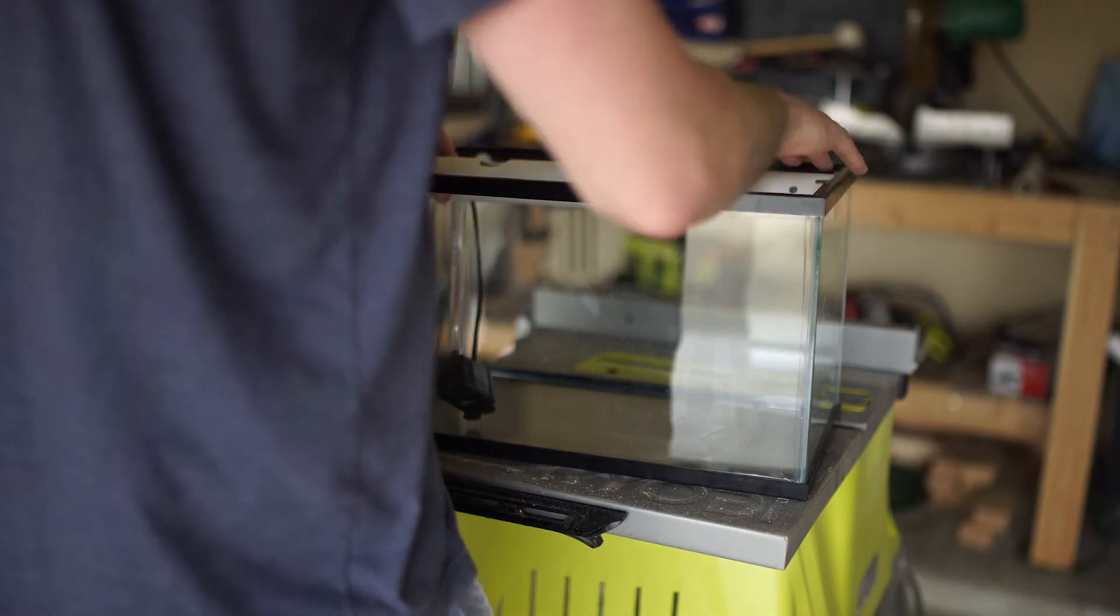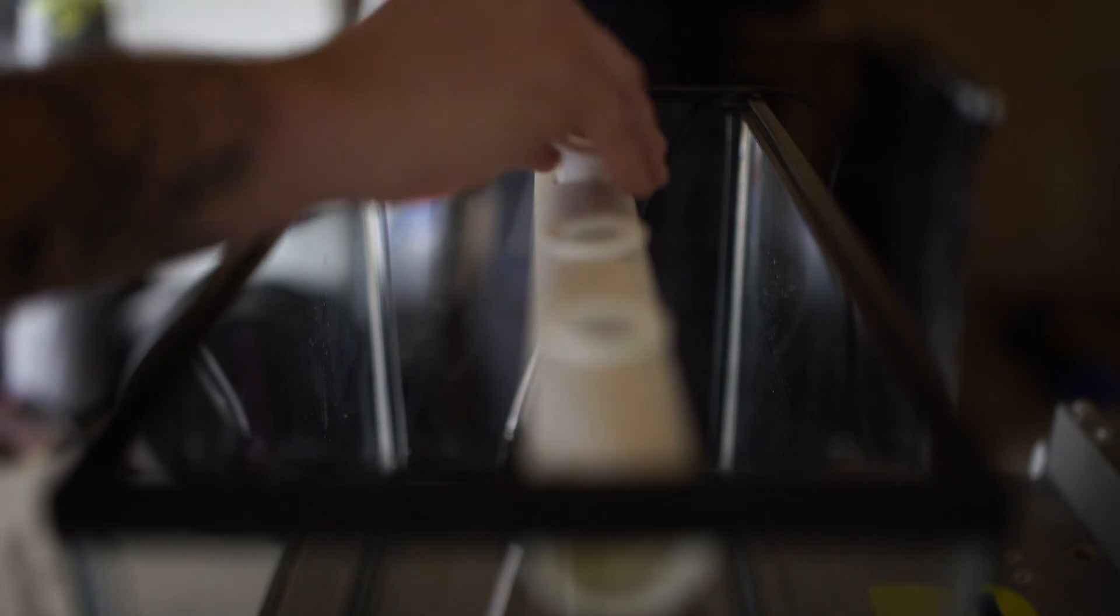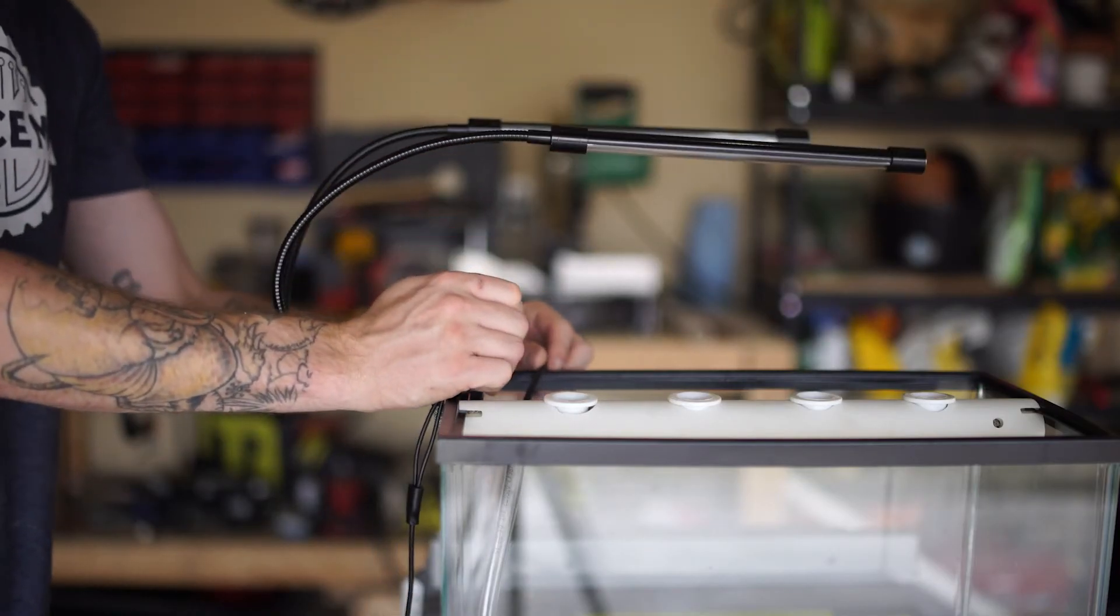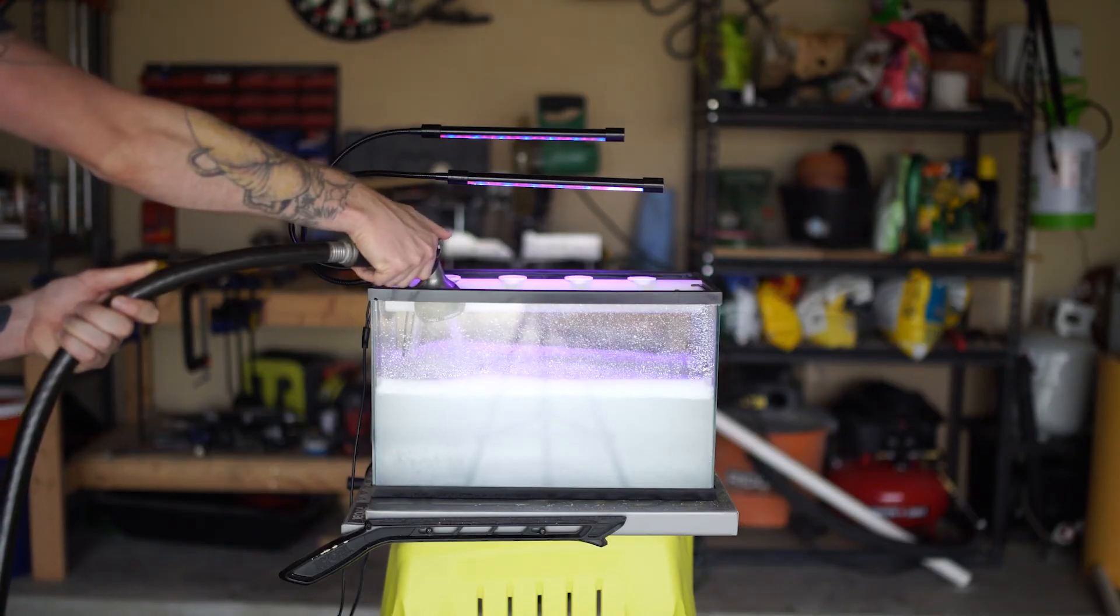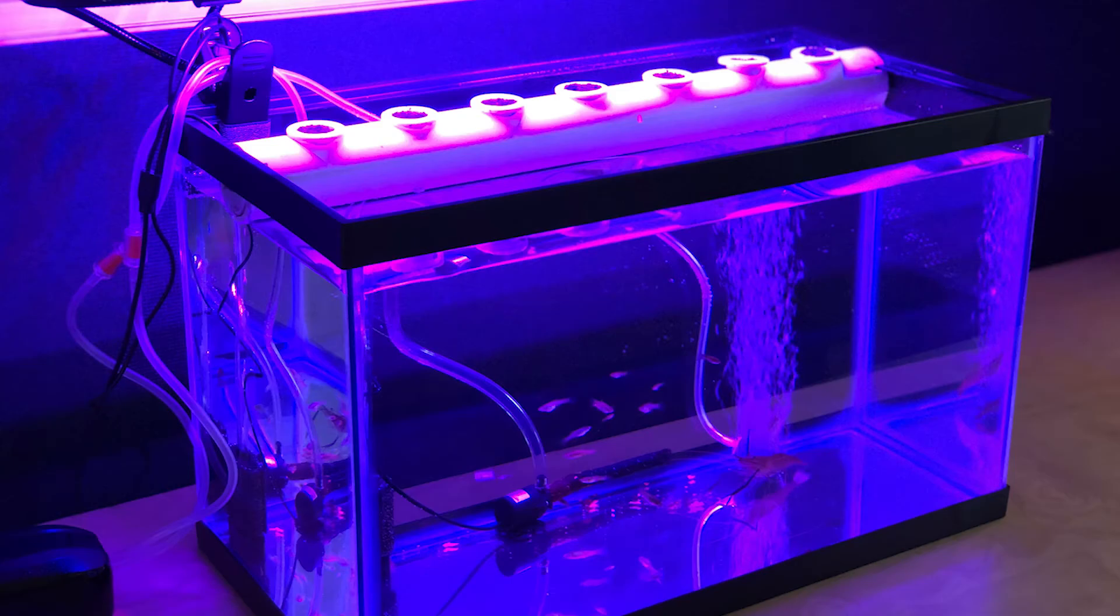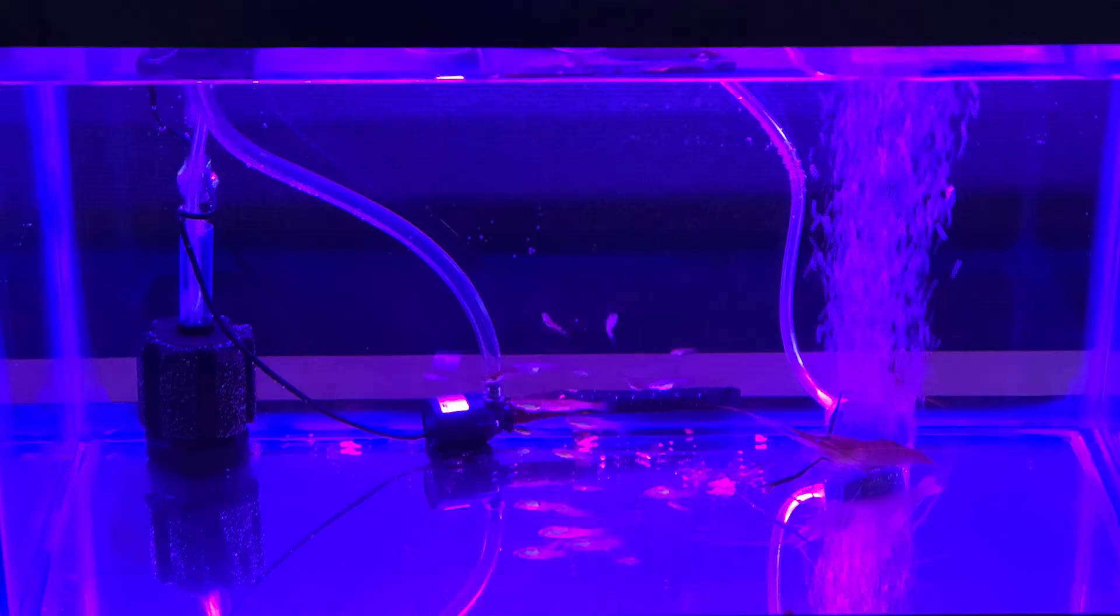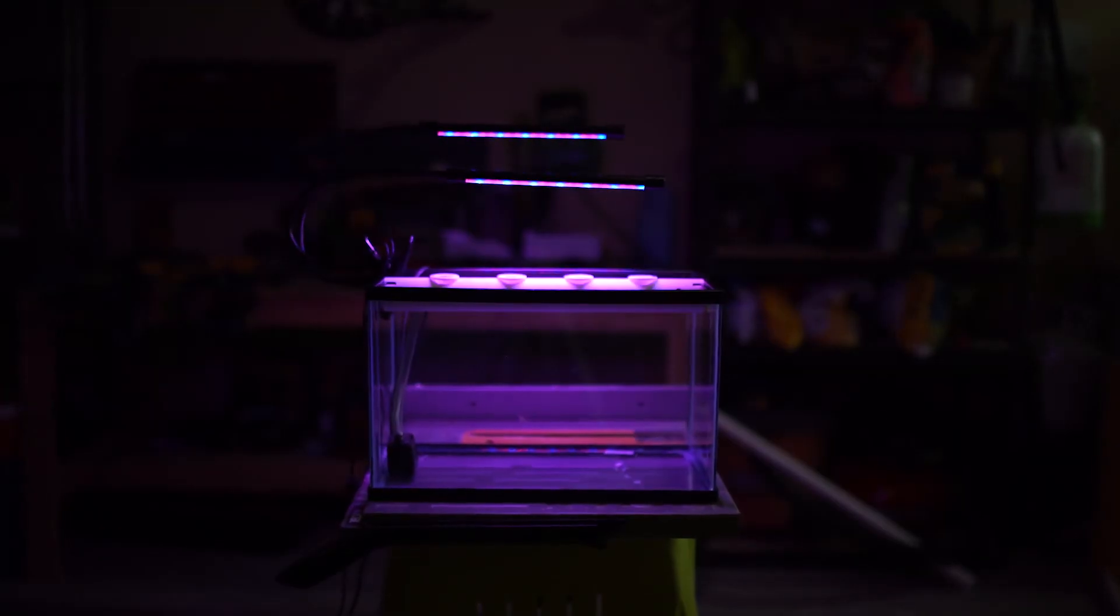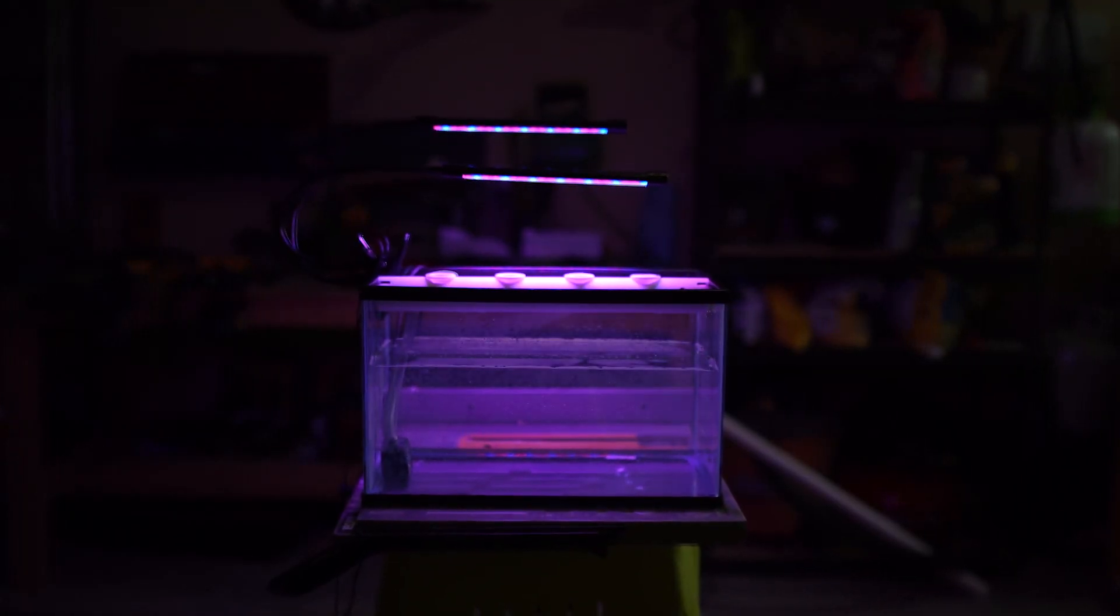Place your net pots in the top holes. Clip on your light, fill it with water, and finally plug your pump in. Now go get some fish, some prawn, or whatever you would like to put in your tank. Make sure the water you add in your tank is good for your fish. Add some peat material to your net pots and put seeds of your choosing in your pots. Now all that's left to do is enjoy. Thanks for watching.